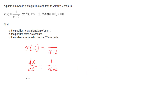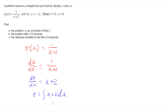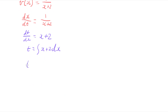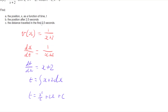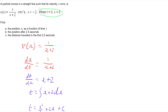Instead I flip this over so that dt/dx equals x plus 2, which gives me a function of time as the integral of (x plus 2) dx. So now I know that time is given as a function of position. Integrating that, t equals x squared over 2 plus 2x plus c. Now let's deal with this constant — we're told that when t equals 0, x equals 0.